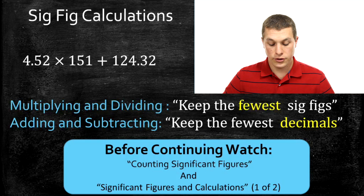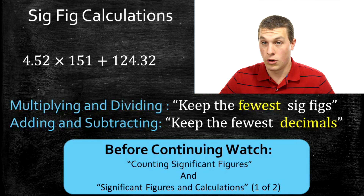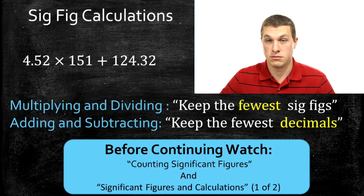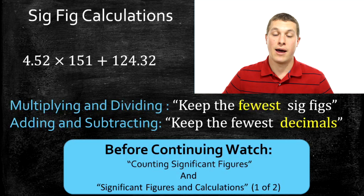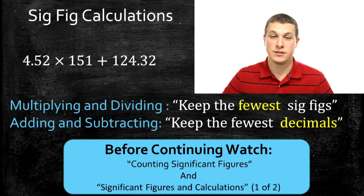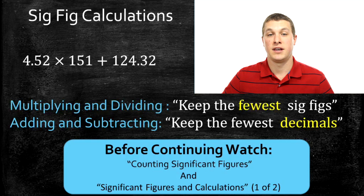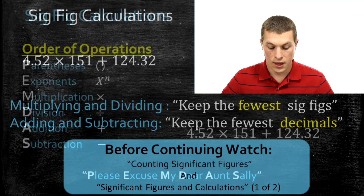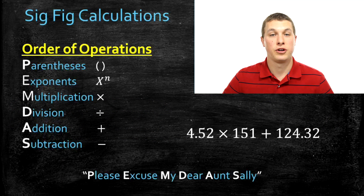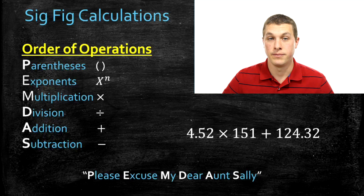What we're going to do here is problems that involve both multiplication and division or addition and subtraction. If you haven't yet watched my videos on counting significant figures or on significant figures and calculations part one, go ahead and do that before continuing. The very first thing you want to think about when doing problems that mix these operations is: which order should I do them in?